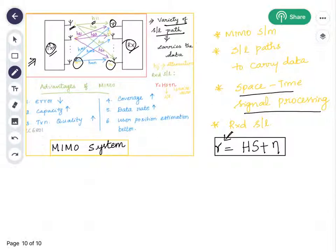Let us see the advantages of using a MIMO system. By using MIMO system we can reduce error rate, the capacity increases, it improves the quality of the transmission data, it improves coverage and increases the data rate. It also provides better estimation in positioning the user.